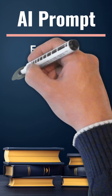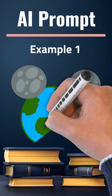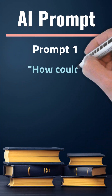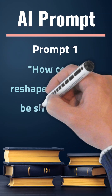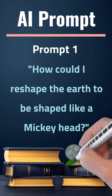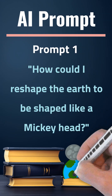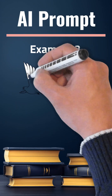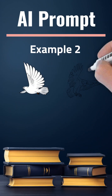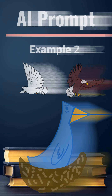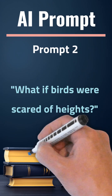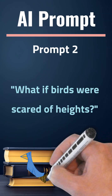For example, let's say you want to know how to shape the earth like a Mickey head. You could type in a prompt to get a description of how to pull and attach two moons to the crust of the earth to become the ears. Or if you're curious what would happen if birds suddenly became afraid of heights, type in a prompt for an explanation of how birds' behavior would immediately change and the resulting impact.